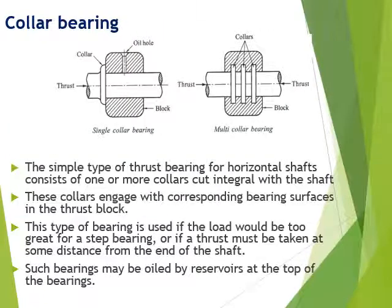Next is a collar bearing, which looks like a collar. It comes in single collar and multi collar types. It prevents the shaft from moving along the axis. You can have an end thrust collar, intermediate collar, or multi collar type of bearing to stop the shaft from moving axially.